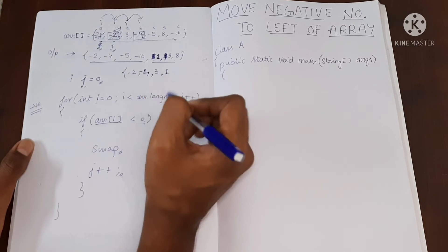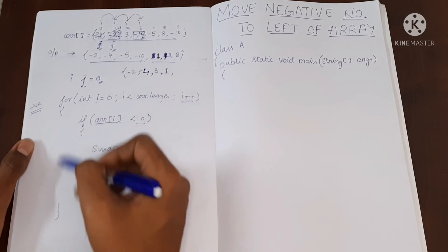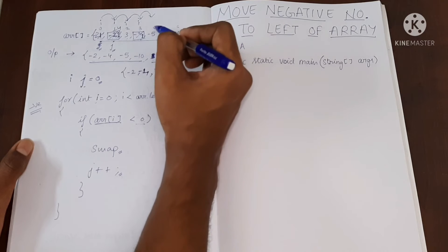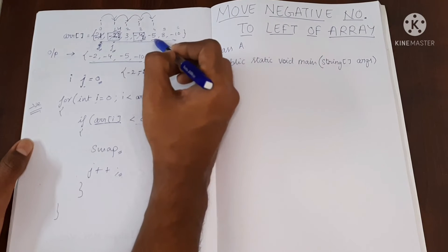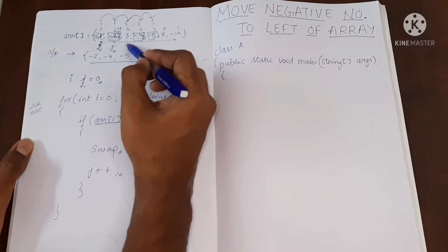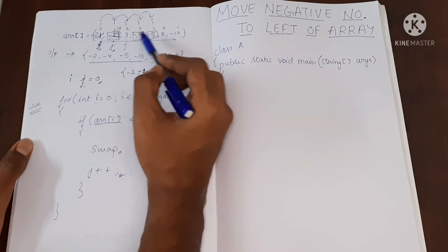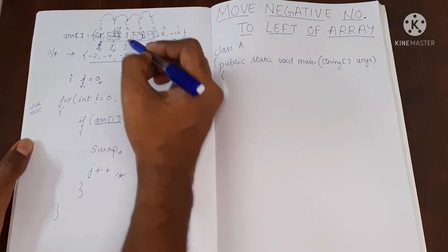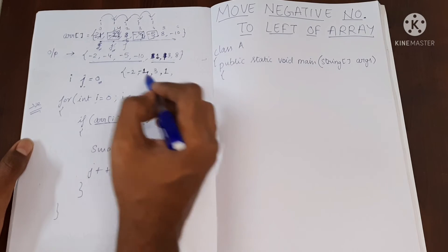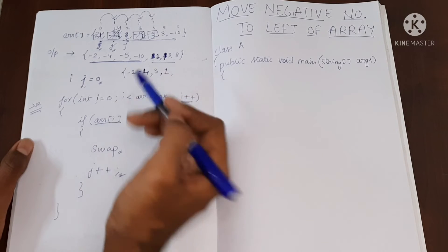So here it will be 1, and minus four moves to the front. This way it will keep moving. We move to the next location and find minus five. J was here; we do J plus plus and then swap minus five with three. If we continue this, all the negative values will move to the beginning of the array.